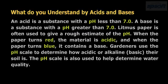Litmus paper is often used to give a rough estimate of the pH. When the paper turns red, the material is acidic and when the paper turns blue, it contains a base.